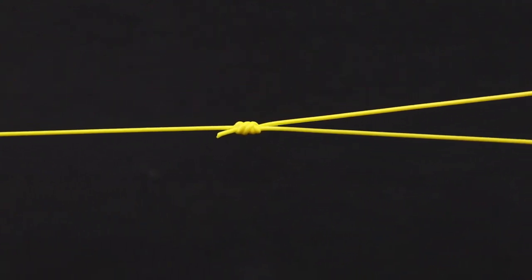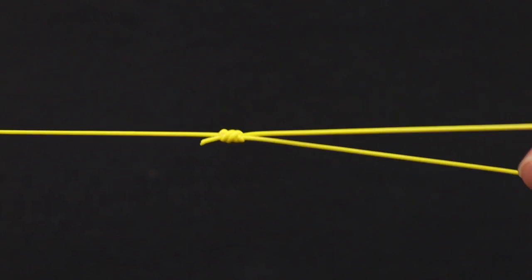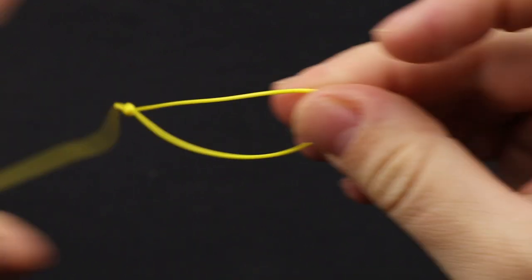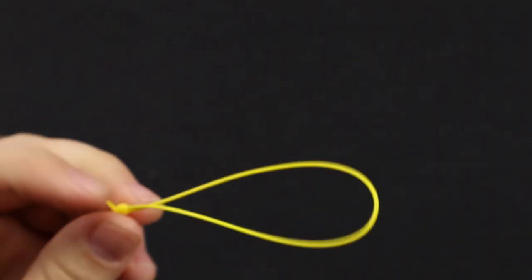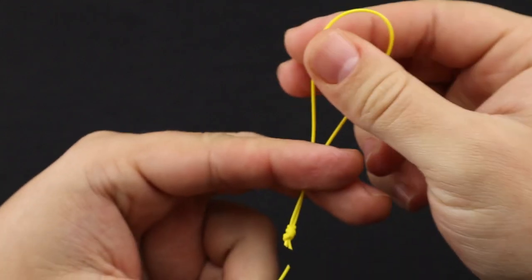What you're left with is the completed surgeon's loop. Now you might want to add a hook or a lure to this loop, so you'll do a little different process.